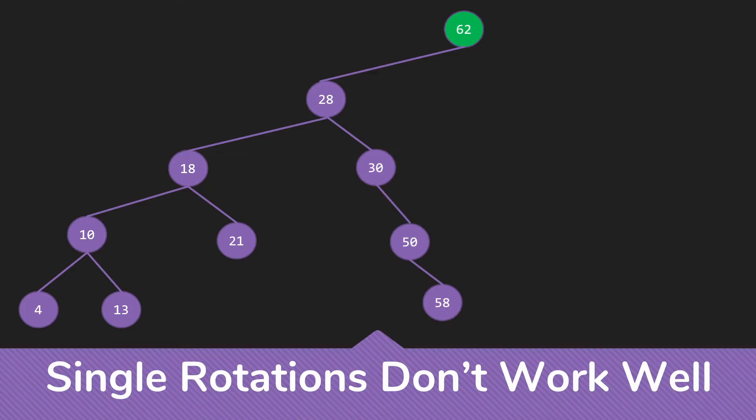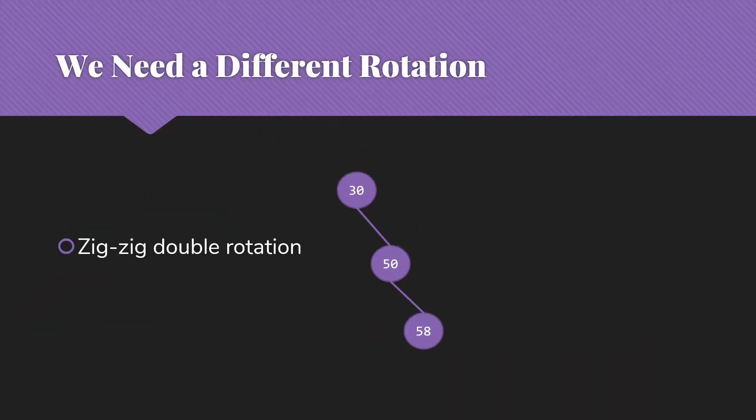We said that we wanted, when things were a big O of n search, that we wanted to be improving the structure. And while this wasn't actually a big O of n because we had a bunch of things off the left, we can imagine where we could have a tree that was just one long line. And certainly we would expect that to get better. So instead of single rotations, we're going to use a different kind of rotation, a zig-zig double rotation.